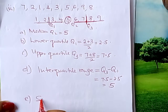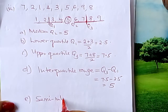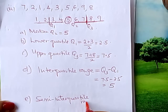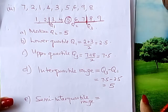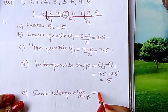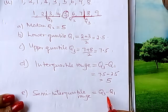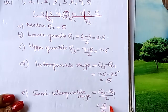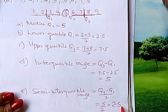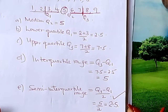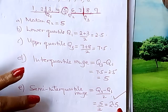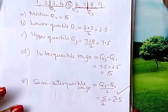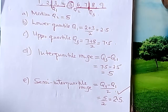Finally, we get the semi-interquartile range, also known as quartile deviation — it is good to know both terms, as either can appear in the exam. The semi-interquartile range is Q3 minus Q1 divided by 2. The interquartile range is 5, so 5 divided by 2 gives 2.5. Go and practice these things, internalize them, and whenever tested, you should be able to get them right. All the best, God bless you.